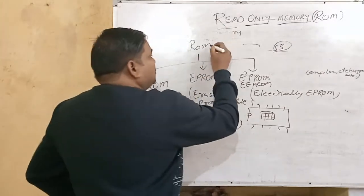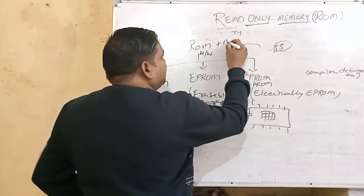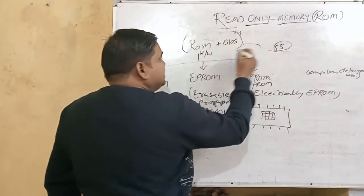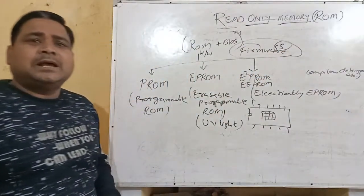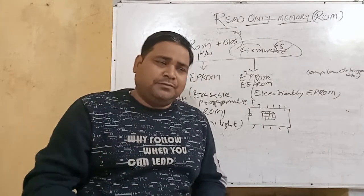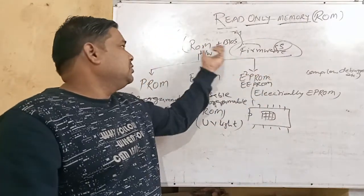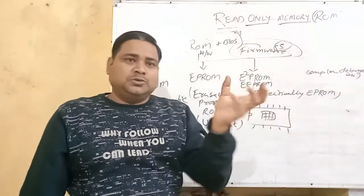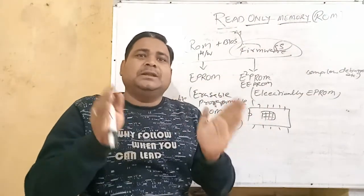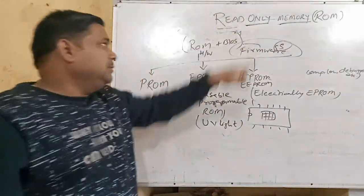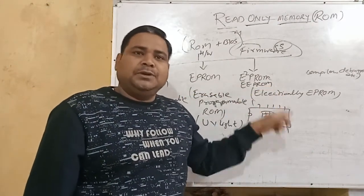The most important program stored in ROM hardware is BIOS. This is all about read-only memory. Read-only memory is of three types: PROM, EPROM, and EEPROM. So this concludes our discussion on read-only memory.